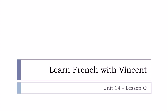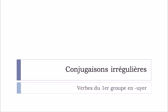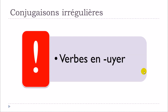Bonjour à tous and welcome to Learn French with Vincent. This is unité 14, leçon O. In this lesson, we'll see together les conjugaisons irrégulières and we'll specially work on les verbes that will end with U, Y, E, R — les verbes en U, Y, E, R.